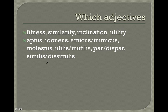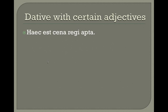So let's take a look at a few sentences that use these. We have the sentence: haec est cena regi apta. 'This is a dinner' — haec est cena — 'regi' is our dative, and 'apta' is our adjective of fitness. This is a dinner fit for a king. So here's our adjective; it takes the dative to finish the idea.